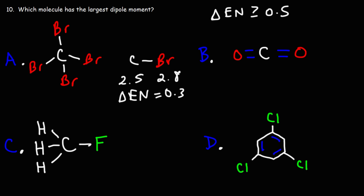So the carbon-bromine bond is relatively nonpolar. But because the electronegativity values are not the same, you do have a slight partial negative charge on bromine and a partial positive charge on carbon, so there's a small dipole moment in those bonds. For all practical purposes those bonds are considered relatively nonpolar. To draw the dipole moment, we draw an arrow pointing towards the electronegative atom — in this case, bromine.